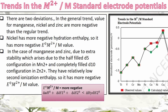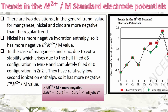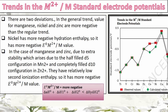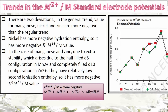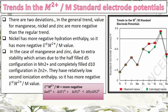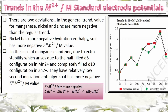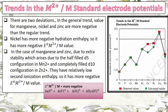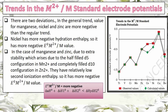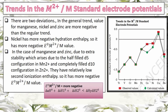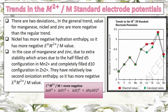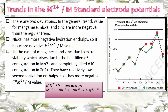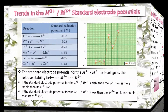For manganese and zinc, the E° value is more negative than the regular trend because on losing two electrons they attain a stable configuration, giving them relatively lower second ionization enthalpy. Hence they have more negative E° values. In general, E° will be more negative if enthalpy of atomization and ionization enthalpy is lesser than the enthalpy of hydration. For nickel, higher hydration enthalpy causes more negative E°.